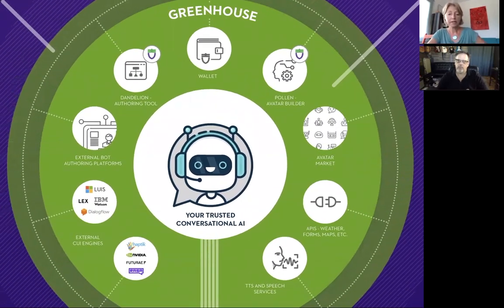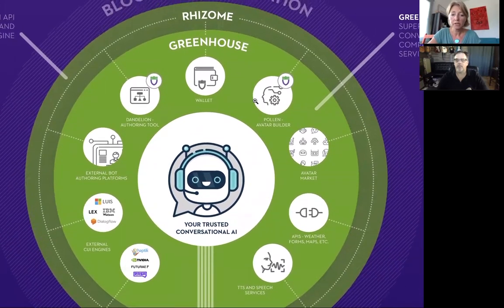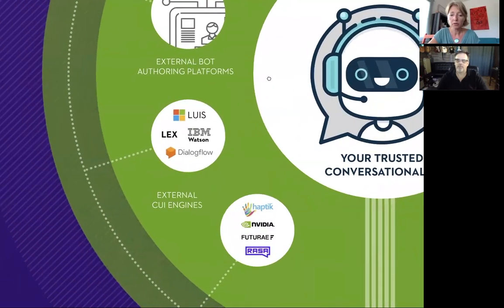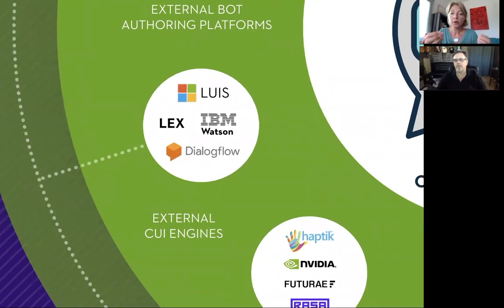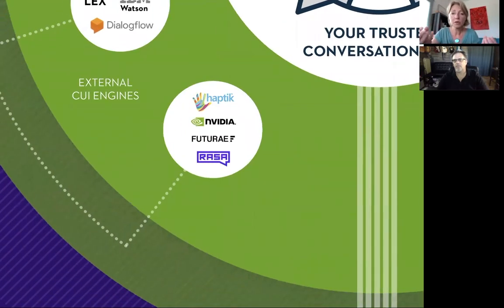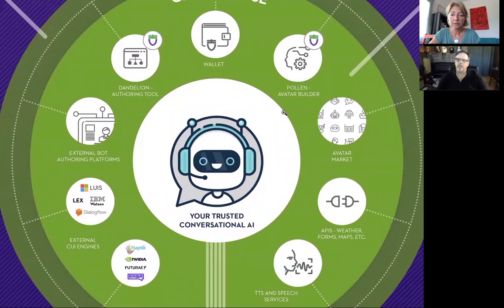And if I understand correctly, this is also about combining different components. I could start with SEED's Dandelion authoring tool — which I used in the beta test and it's really easy — and then combine it with a UI engine like IBM Watson or Dialogflow. The power seems to be in the combination of different components from open source projects and small developers, not only the big five, but just about everybody who cares about building conversational AI that respects privacy.